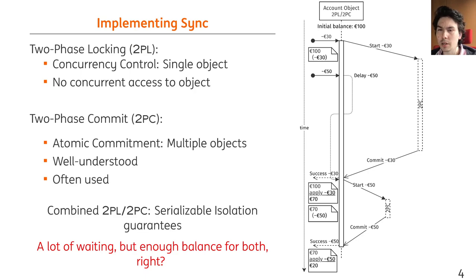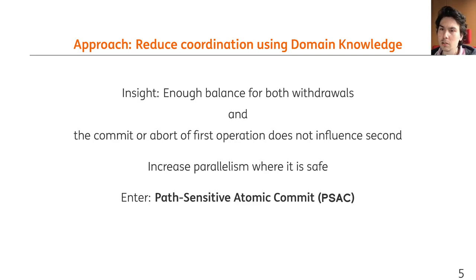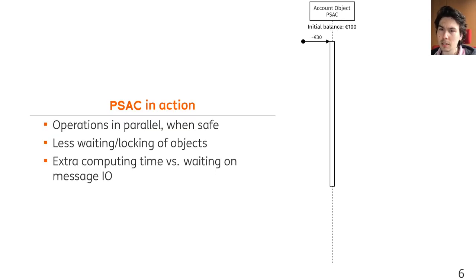Note here that there is a lot of waiting going on, but also that there is actually enough balance for both withdrawals from the start. So can we use this insight? This insight, together with the notion that the commit or abort of the first operation cannot influence the acceptance of the second, allows us to speed this up. For this, we devised the path-sensitive atomic commit algorithm. PSAC thus requires some information on objects and operations, such as guards and effects on the operations, and that groups of operations form atomic steps and are effectively transactions. In our domain-specific language example, these are defined. Now we can look at the same example as before, but using the domain knowledge captured in such formalism. PSAC tries to do operations in parallel, but only when it can determine at runtime that operations are independent, resulting in less waiting on other transaction participants and trading unused CPU time that would otherwise be spent waiting.